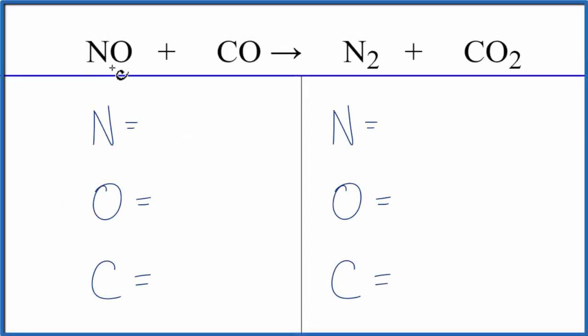In this video, we'll balance the equation NO plus CO yields N2 plus CO2. Let's count the atoms up. We have one nitrogen, and then we have one oxygen, plus this oxygen here. So we have two oxygens, and then we have the one carbon.